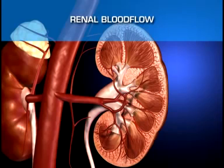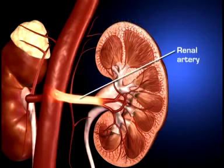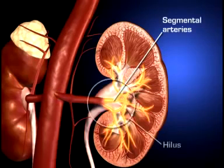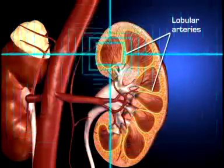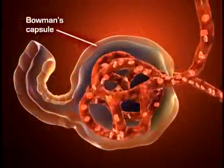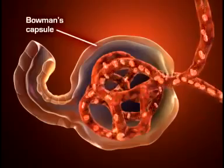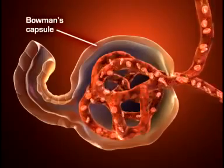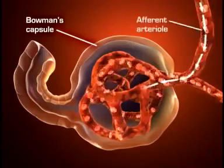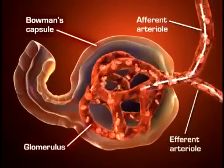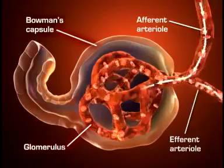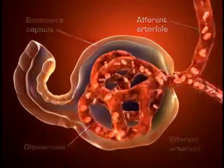Each kidney is supplied with blood by a single renal artery that arises on its respective side of the aorta before dividing into five segmental arteries that enter the hilus. Within the kidney, each segmental artery branches into several lobular arteries, which further subdivide to form interlobular arteries that branch off into afferent arterioles. Blood flows into the glomeruli through the afferent arterioles and out of the glomerulus through the efferent arterioles. The afferent and efferent arterioles regulate glomerular capillary pressure by selectively dilating or constricting.